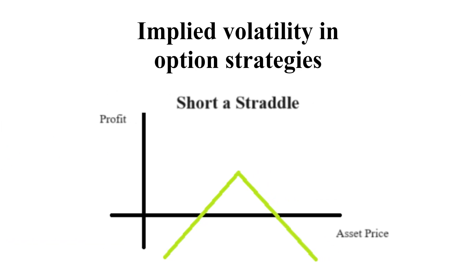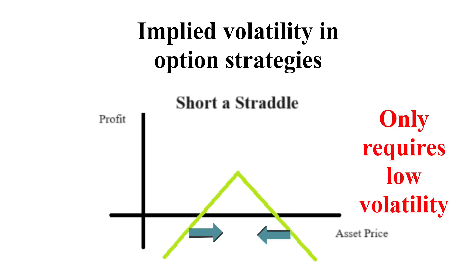In contrast, if the investor expects volatility to decrease while asset price remains stable, it is best to short or to sell a straddle, because this short position will be profitable if the asset price fluctuates slightly within a given range.